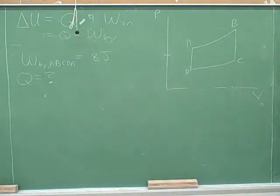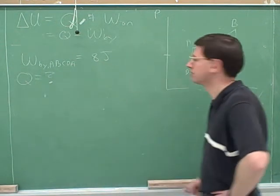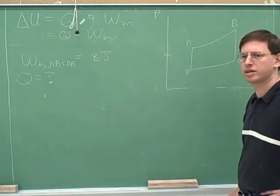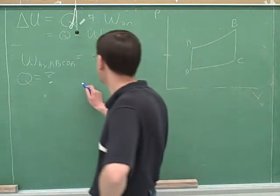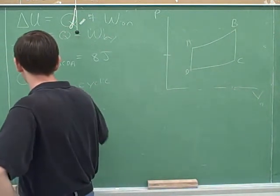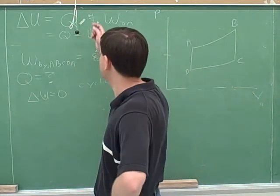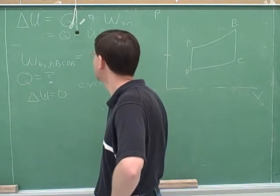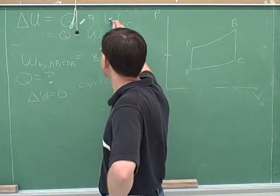Let's try this problem. Let's say that the work being done by the gas from A to B to C to A is 8 joules. Where are we starting and where are we ending? This is a cyclic process, so that means delta U is equal to zero. So you want to find Q. If delta U has to equal zero, then in order for Q to balance out the 8 joules of work done by the gas, we should use the equation: zero equals Q minus W_by.